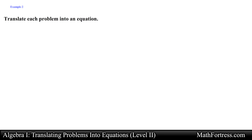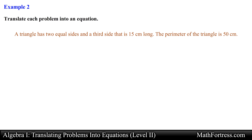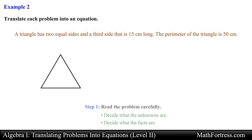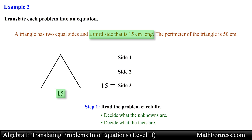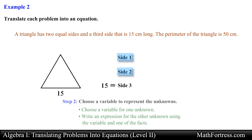Let's try the next example. A triangle has two equal sides and a third side that is 15 centimeters long. The perimeter of the triangle is 50 centimeters. In this example we are dealing with a triangle, so let's go ahead and draw a triangle. Let's first identify the unknowns in this problem. We are given the measurement of one side, but have no idea what the measurement of the other two sides are. The unknowns are the measurements of those two sides.